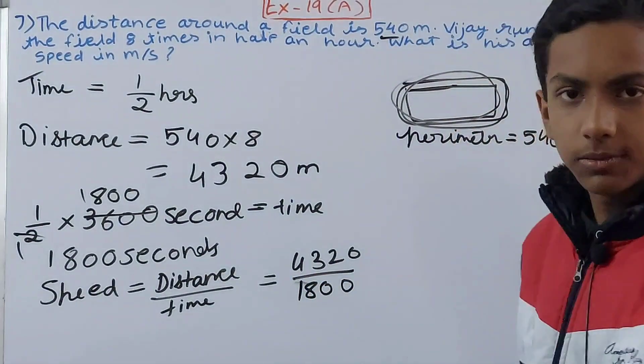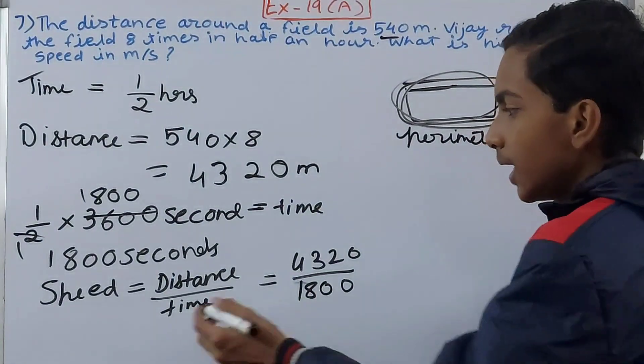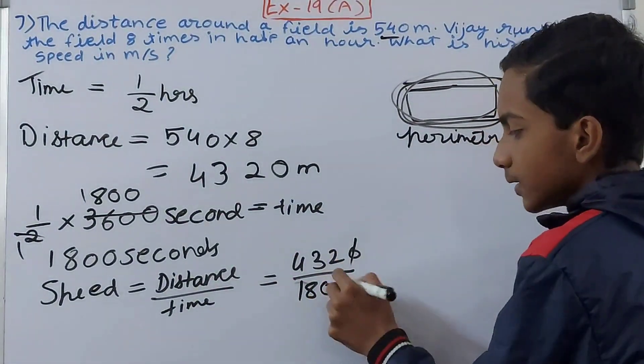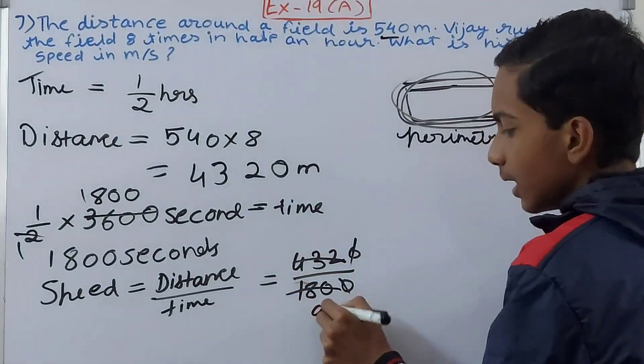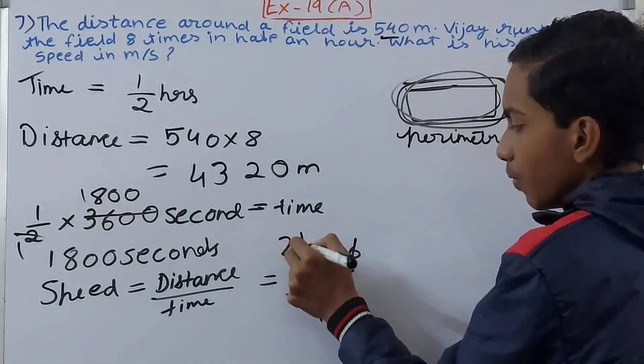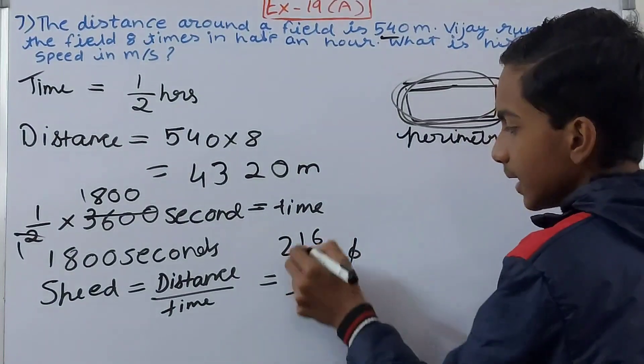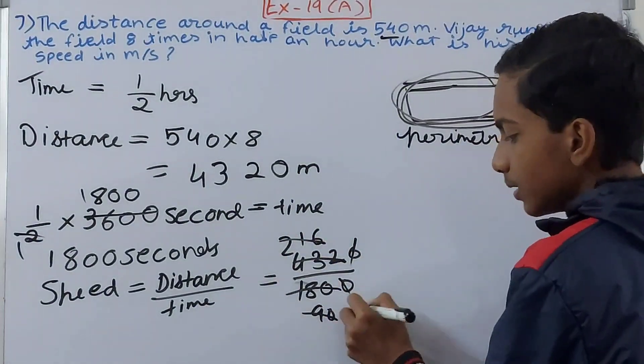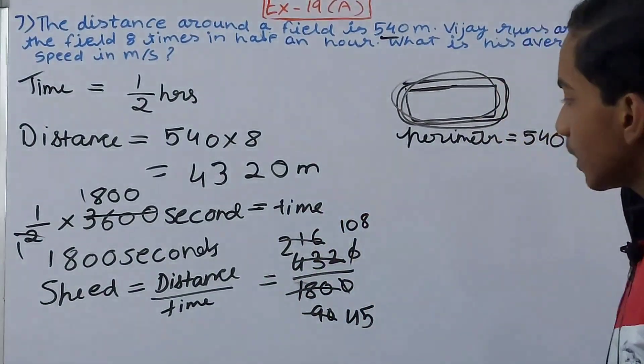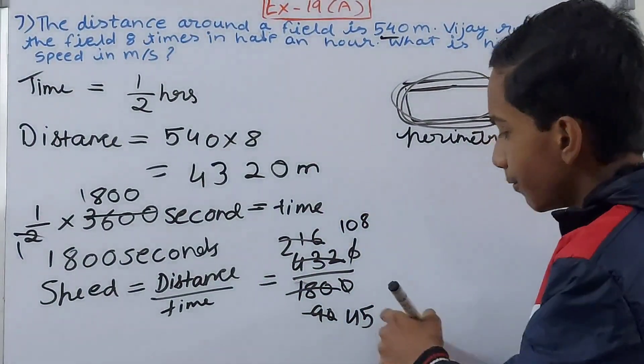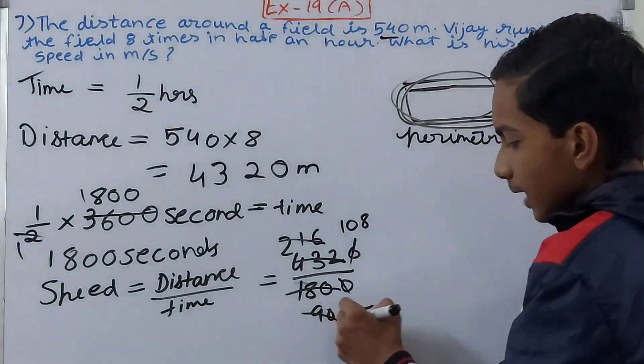And now simply solve this to get your speed in meters per second. Cancel this and cancel this. So 90, 216. Again cancel this and this by 2. 90 goes 45 times, 216 goes 108 times. Again, will this be canceled? Again cancel it by 3 now. 45 goes 15 times, this goes 36 times.